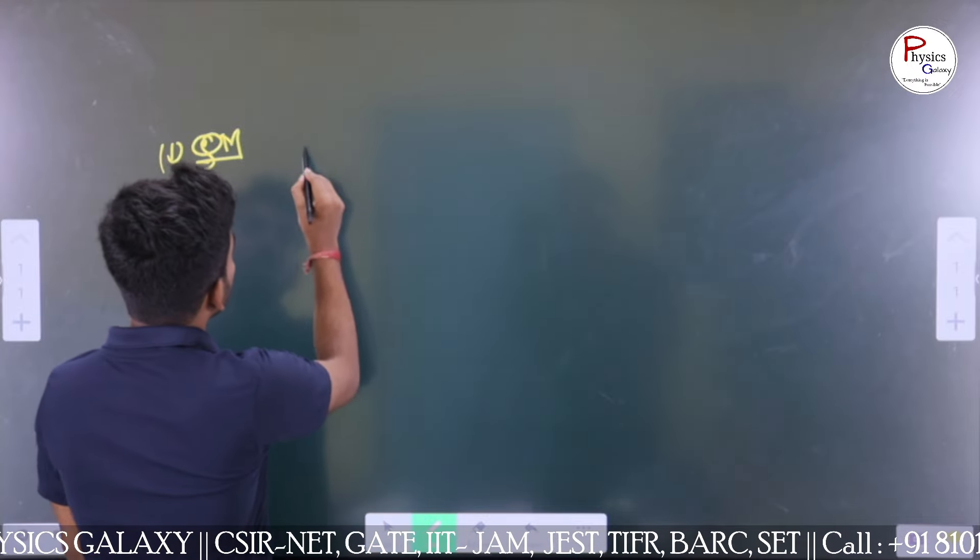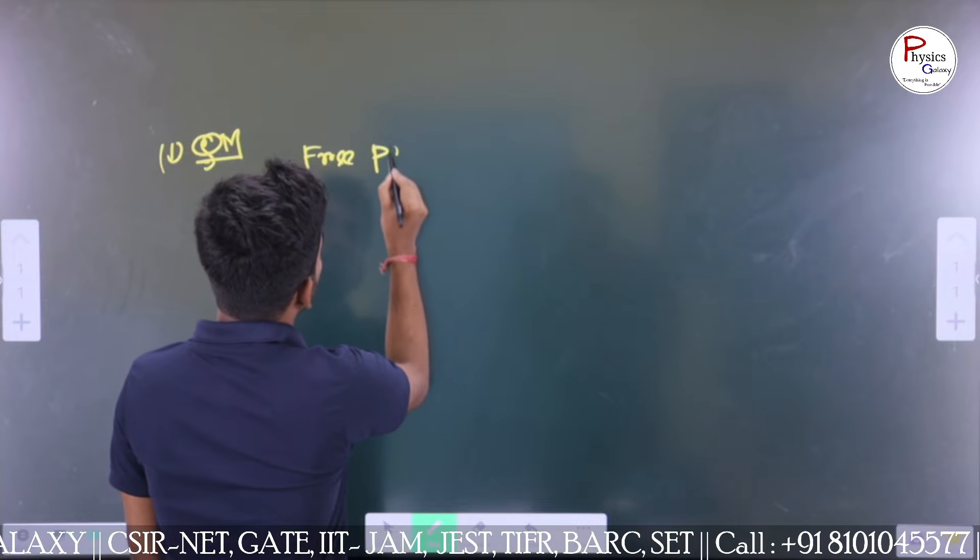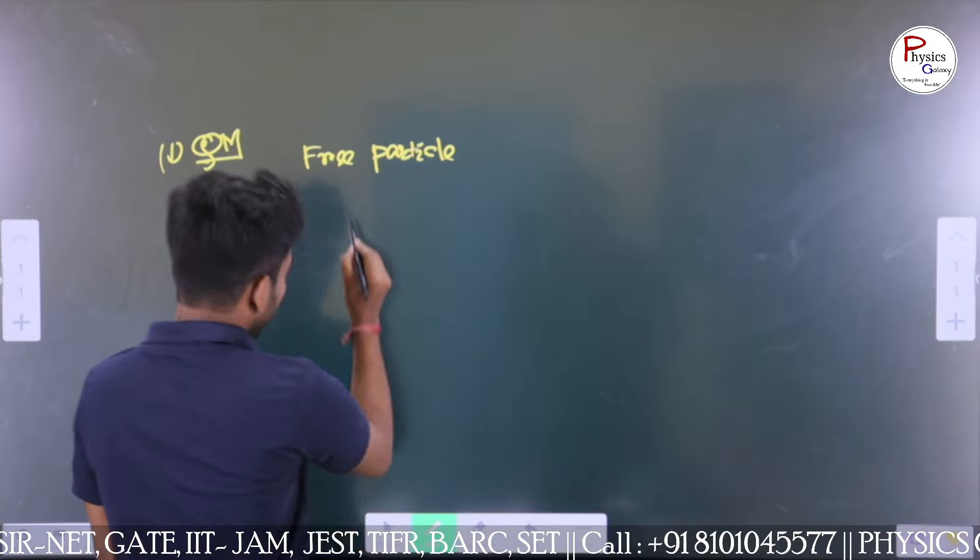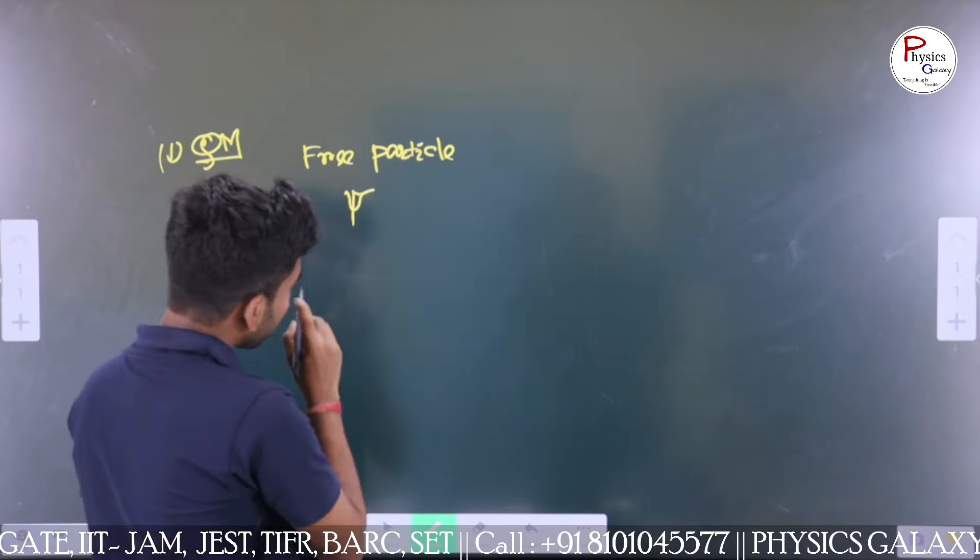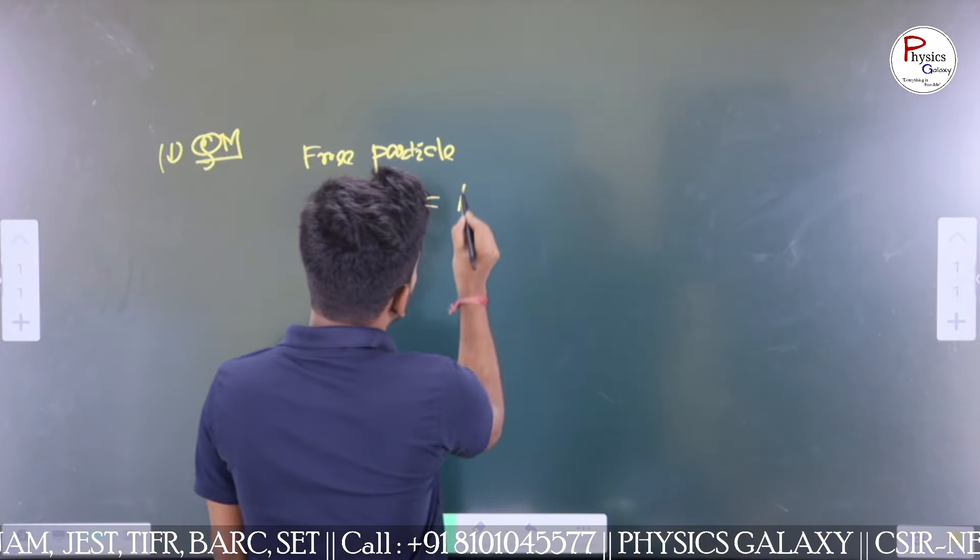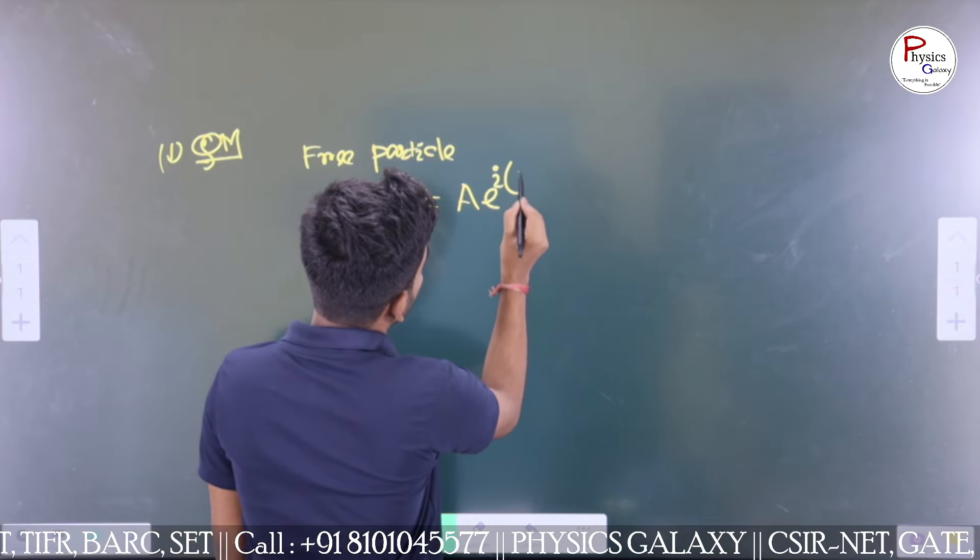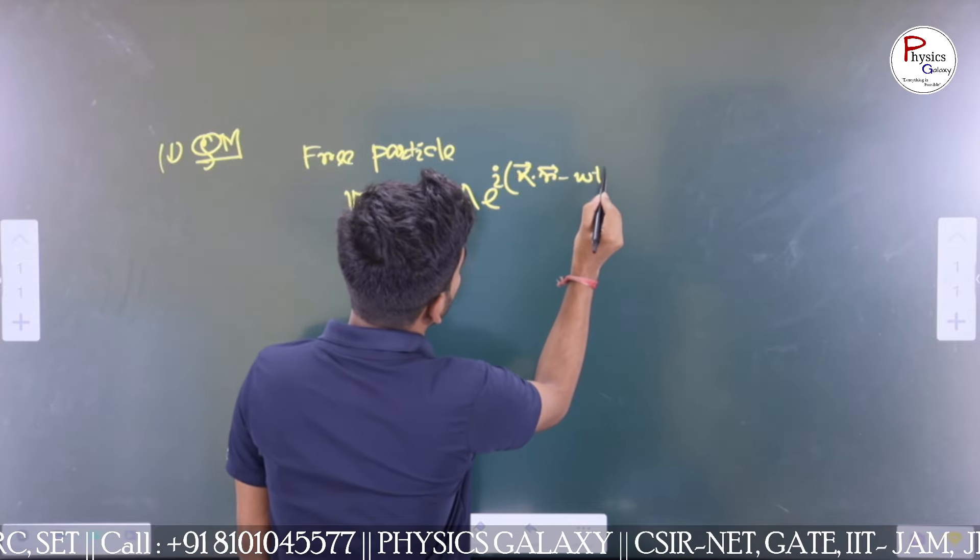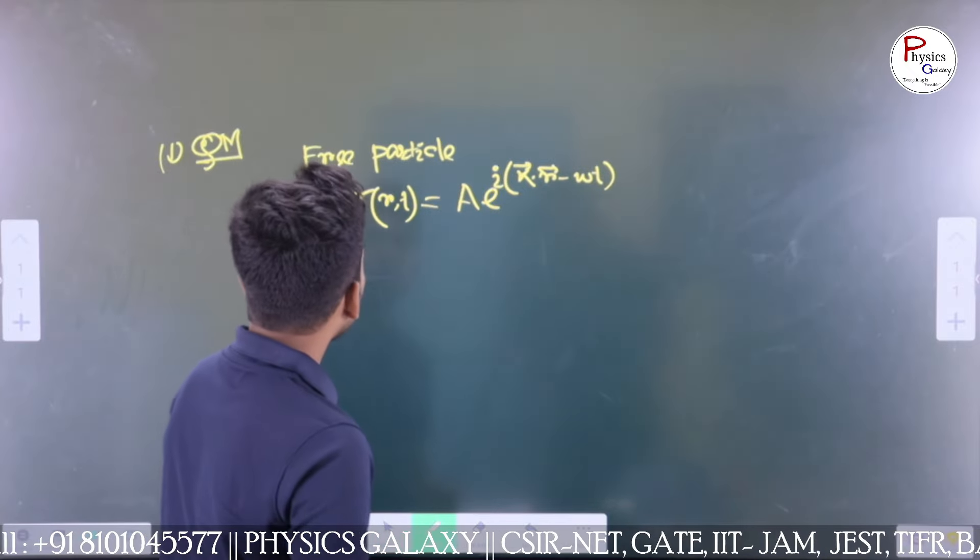At first they asked from quantum mechanics about the free particle wave function. The wave function will be ψ(r,t) = A e^(i(k·r - ωt)). It is just like a plane wave function.